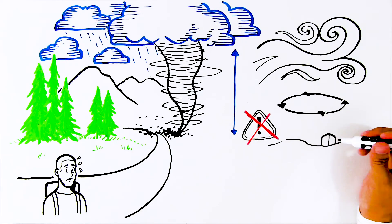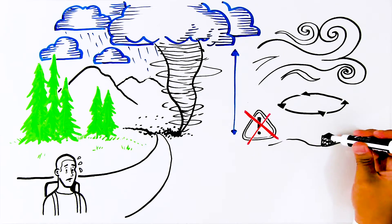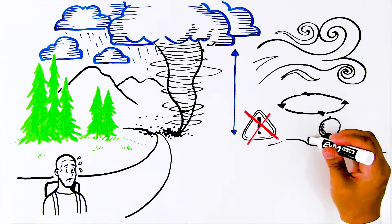Detecting tornadoes here is difficult because they're typically short in duration, and most of our terrain isn't flat. It's hard to see on weather radar.